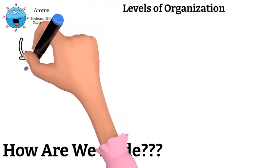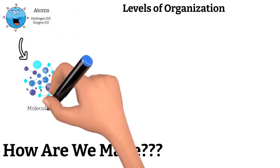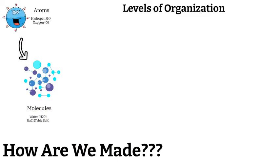Atoms can't help being attracted to other atoms, and when those atoms bond together, they form molecules. Some examples of molecules include water and sodium, or table salt. Water consists of two hydrogen atoms and one oxygen atom, and that is why it is written H2O.